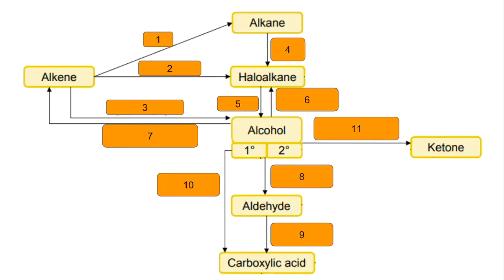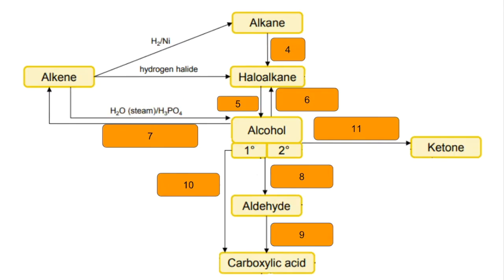Number 1: alkene to alkane. You react it with hydrogen in the presence of a nickel catalyst at 150 degrees C. Number 2: alkene to haloalkane — you react your alkene with a hydrogen halide. Number 3: alkene to alcohol — you react the alkene with steam in the presence of an acid catalyst, H3PO4.